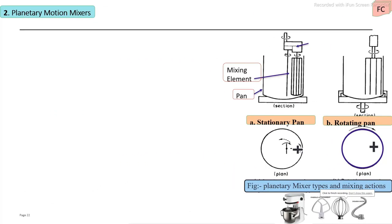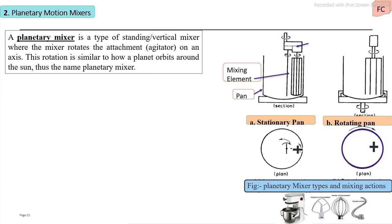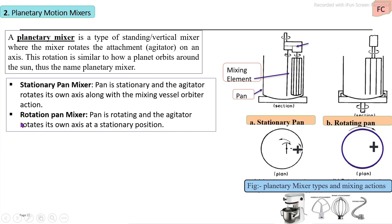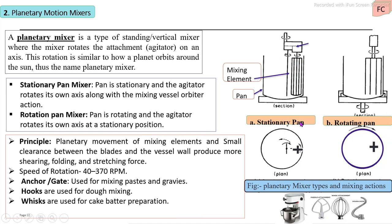The second type is the planetary motion mixer, which is more popular for small to medium scale industries for mixing dough and batters. The planetary action of the mixing element achieves proper mixing. There are two main types: the stationary pan mixer, where the pan is fixed and the mixing element rotates on its own axis with an orbital action; and the rotating pan mixer, where the pan rotates and the mixing element rotates on its axis with an orbital action.